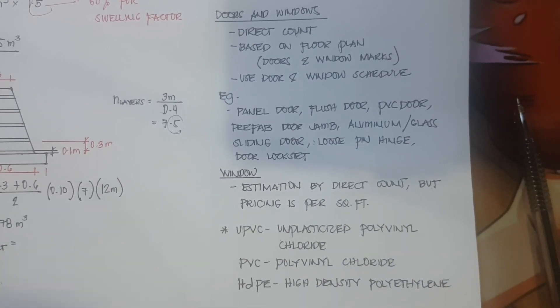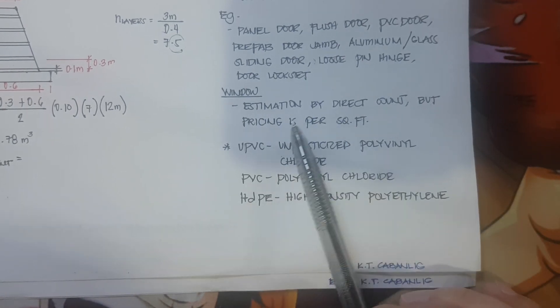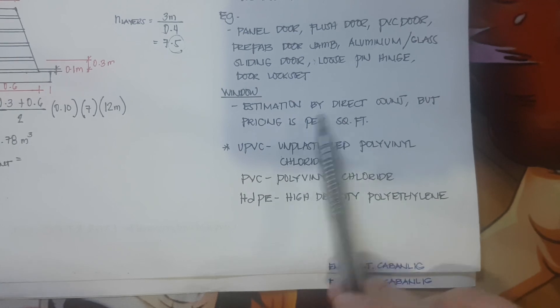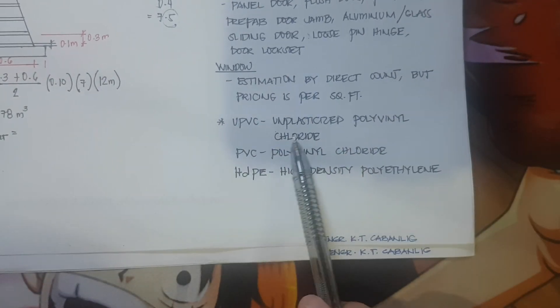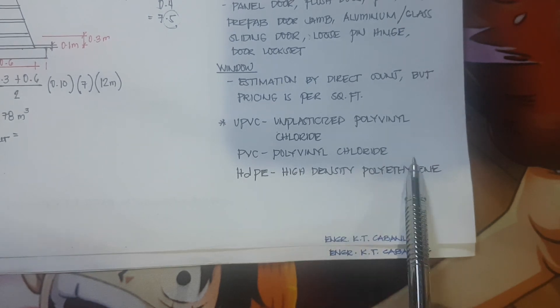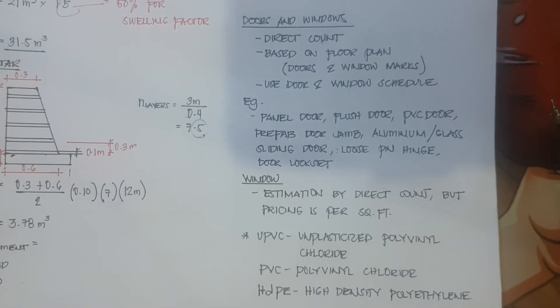The selling or pricing of windows in the market is by square foot. Your PVC stands for polyvinyl chloride, HDPE stands for high density polyethylene. So if there's any question, just comment down below where I posted the link of this video on our page.